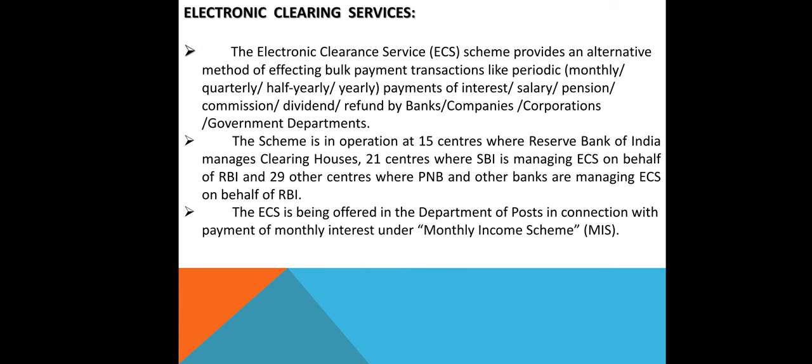The Electronic Clearing Service (ECS) scheme provides an alternate method for efficient bulk payment transactions, such as periodic — monthly, quarterly, half-yearly, or yearly — payments of interest, salary, pension, commission, dividend, and refunds from banks, companies, corporations, and government departments. The ECS scheme is in operation at 15 centers where the Reserve Bank of India manages clearing houses, 21 centers where SBI manages ECS on behalf of RBI, and 29 other centers where PNB and other banks manage ECS on behalf of RBI.